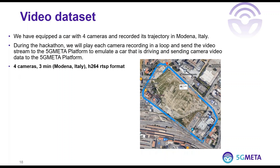If you want to work with videos instead of images, we provide a 360-degree view from a car in Modena, Italy. Since we equipped this vehicle with four cameras, we will stream this as H.264 RTSP video streams. This is to simulate a vehicle with advanced ADAS capabilities that is moving in a sensorized area known as the Modena Automotive Smart Area.